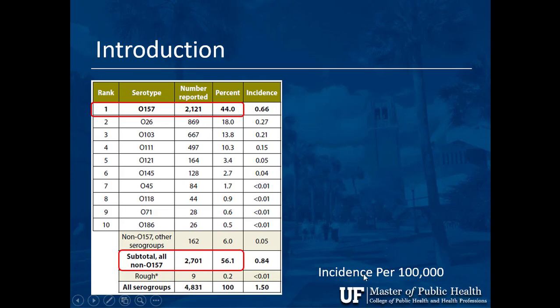Incidence is the number of new cases per a certain population in a given time period. In 2015, there were 2,121 reported O157 cases — about 44% of the 6,000 total. The incidence was 0.66 per 100,000 people in 2015.